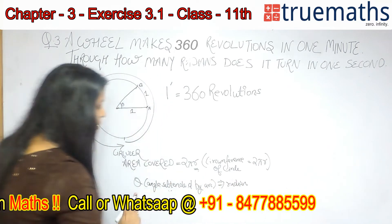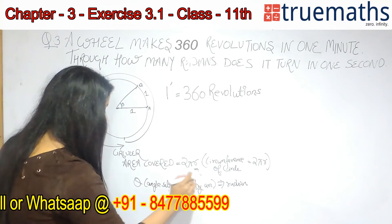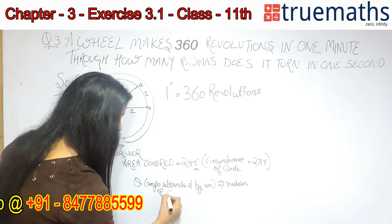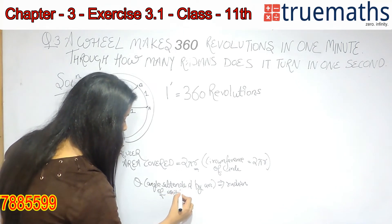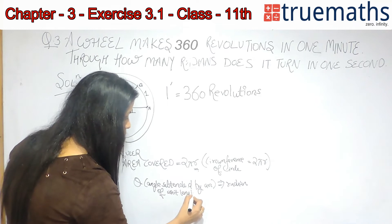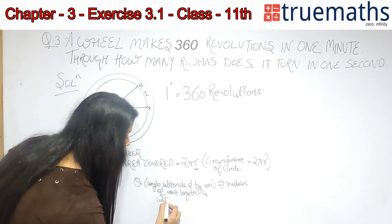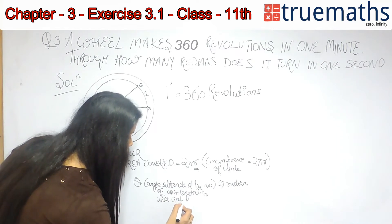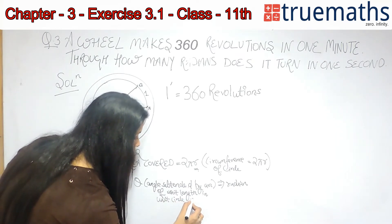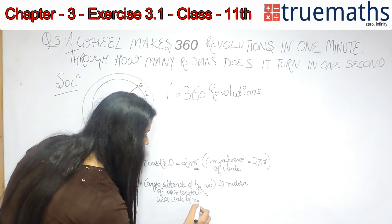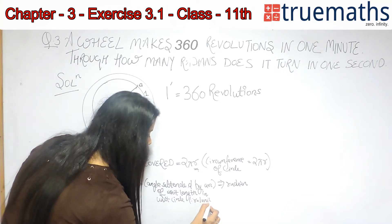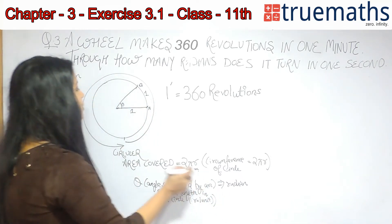So the angle is also subtended by arc of unit length in unit circle. That is, the radius is 1 unit. This is radian.